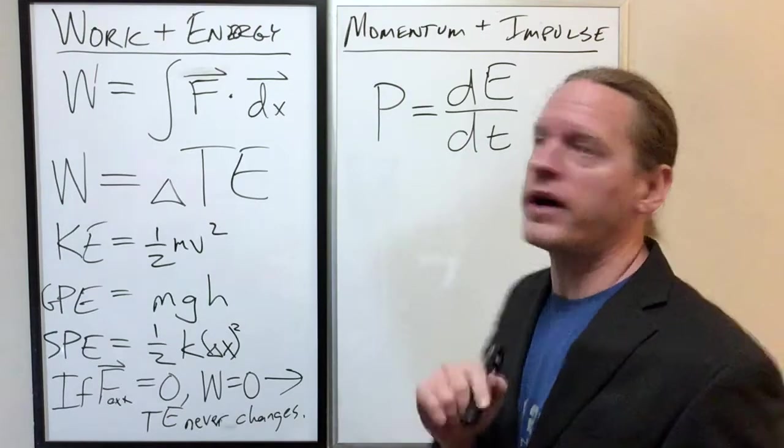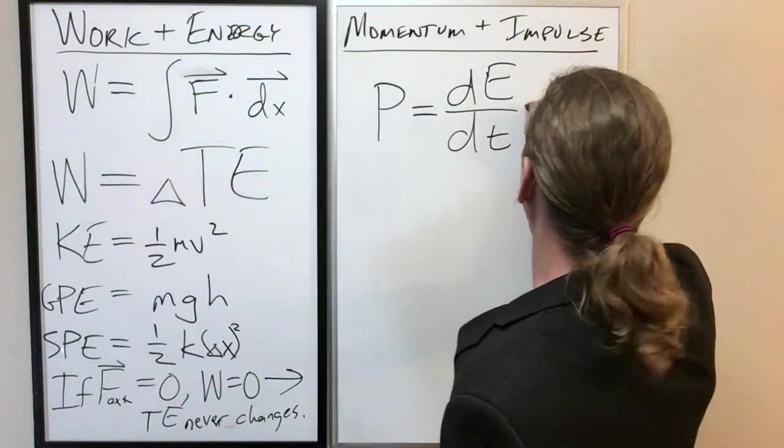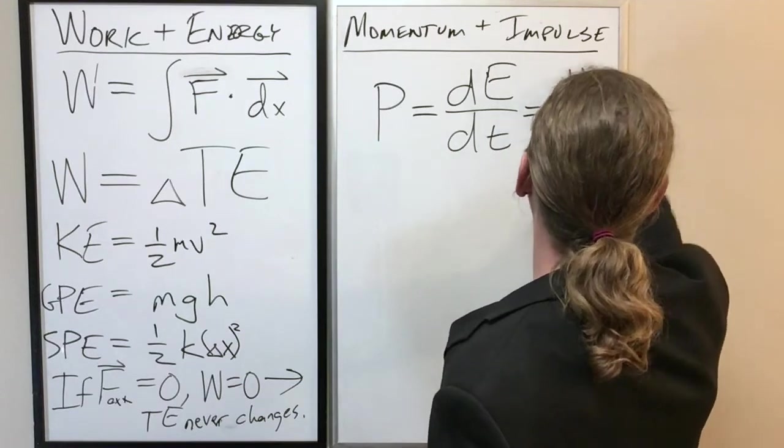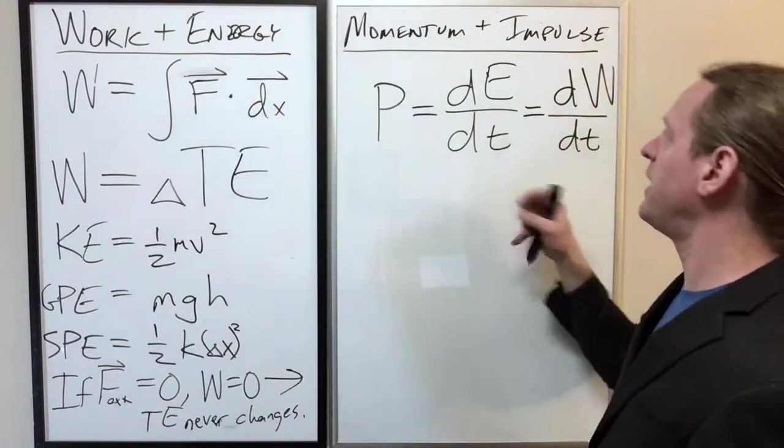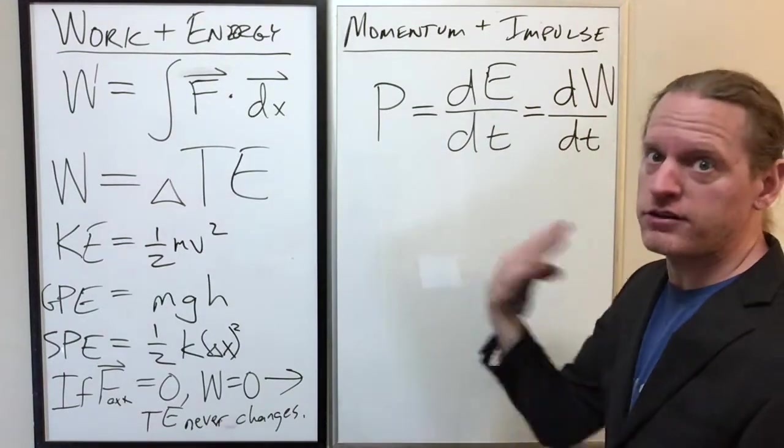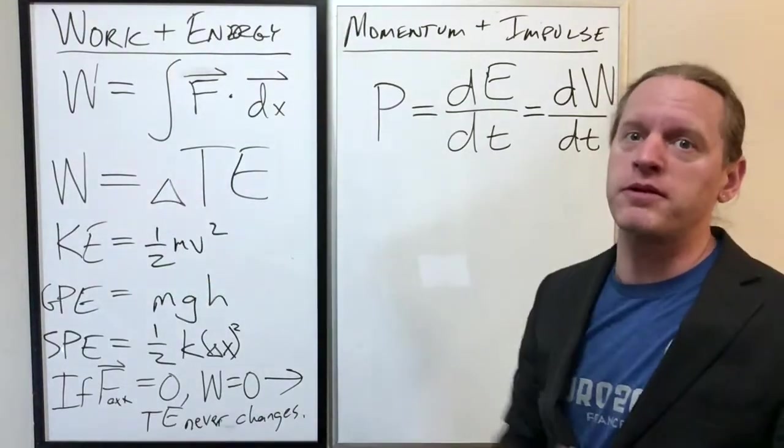Or equivalently, because energy is the same as work, we can also define it as dW/dt, and what that means is instead of asking how many joules of energy does it consume per second, we can say how many joules of energy does it output per second.